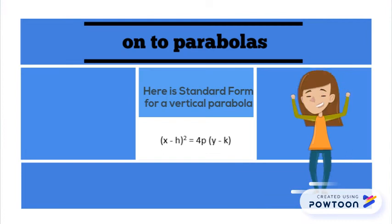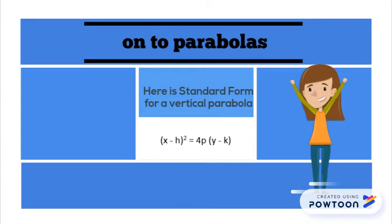Let's move on to parabolas. Here's the standard form for a vertical parabola: x minus h squared equals 4p times y minus k.